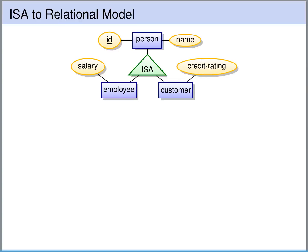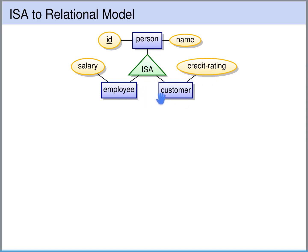Let's first look at our example. Here we have an entity set person with an ID that identifies the person and a name. We have an entity set employee which additionally has a salary, and every employee is a person. We also have an entity set customer with a credit rating, and every customer is a person. So both employee and customer inherit the attributes ID and name from person.